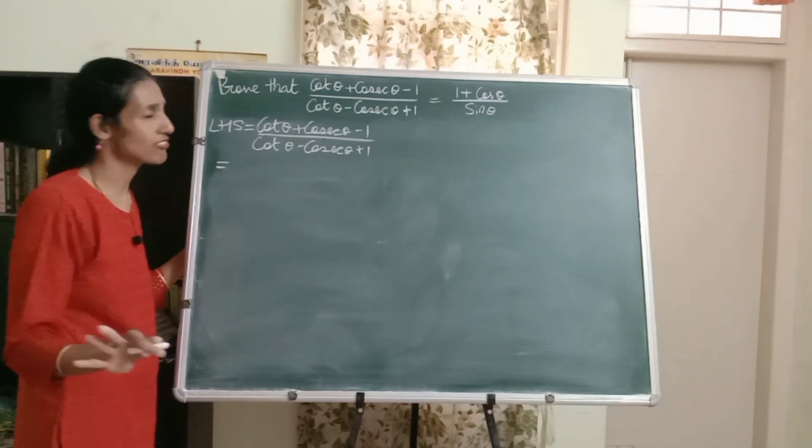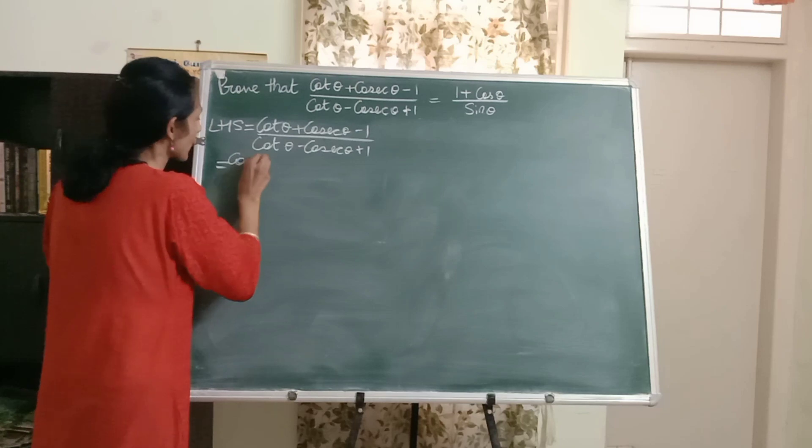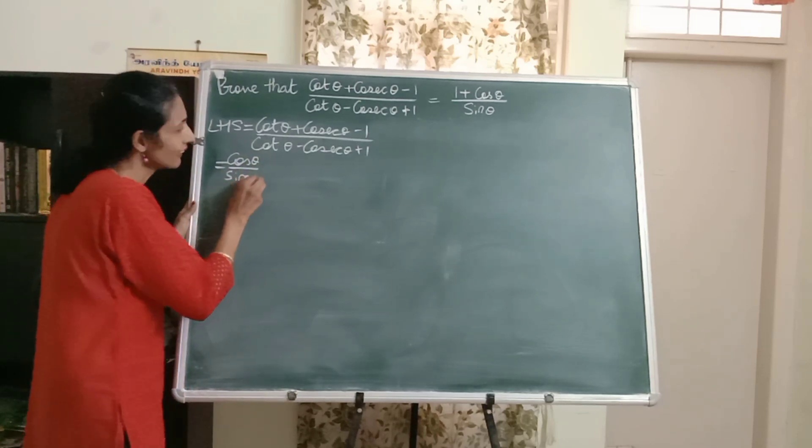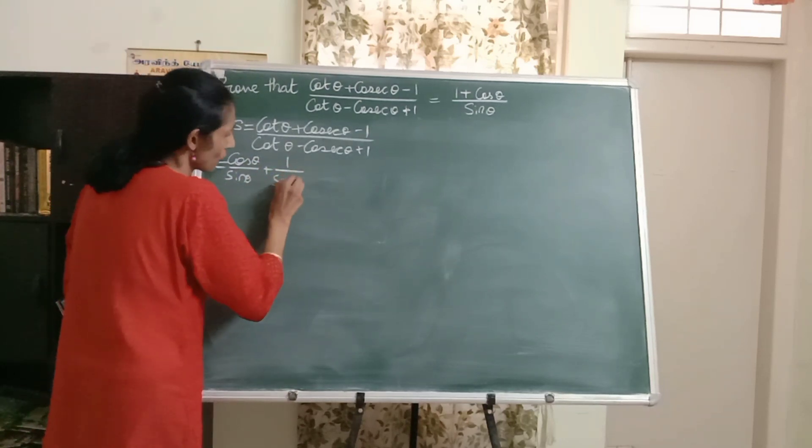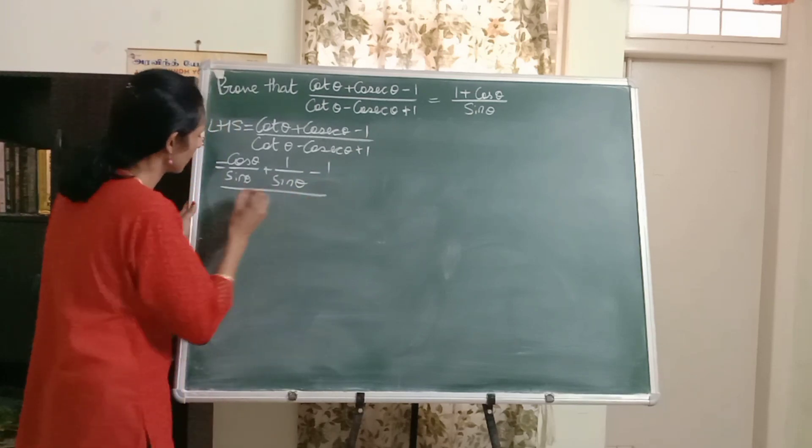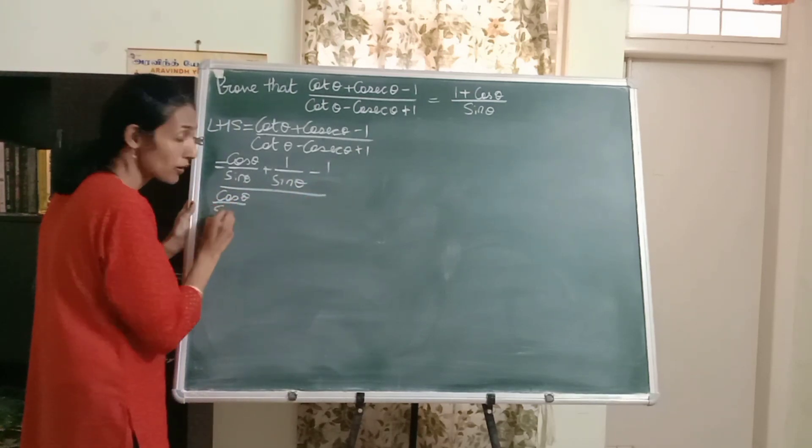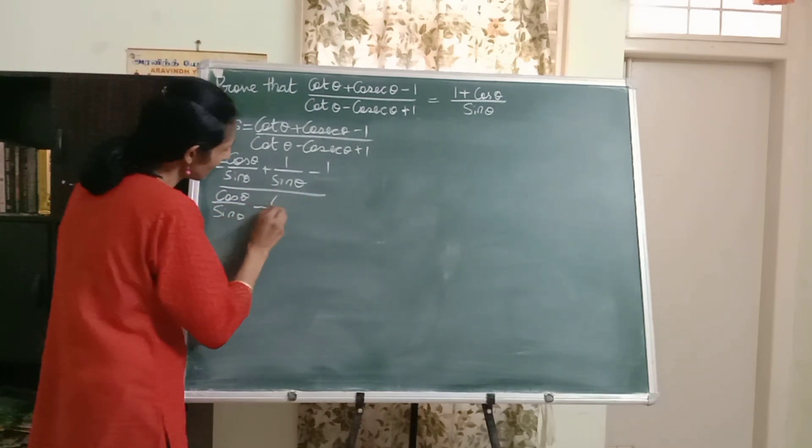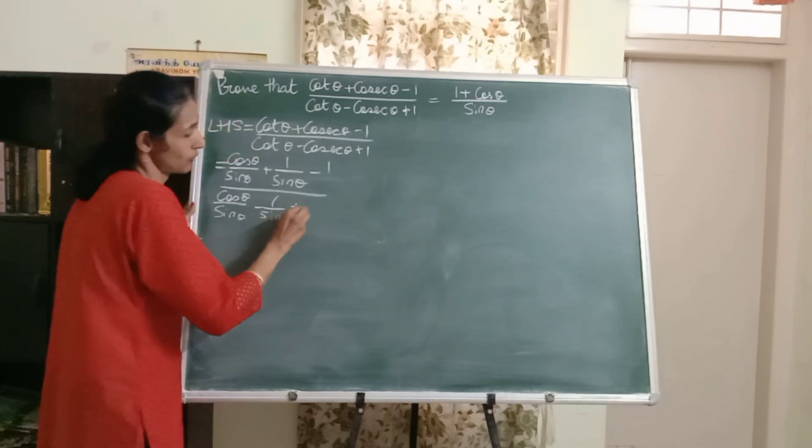How do you do that? Just apply the definition. Cos theta by sine theta, plus cosec is 1 by sine, minus 1 divided by cos theta by sine theta minus 1 by sine theta plus 1.